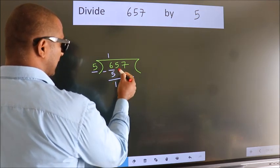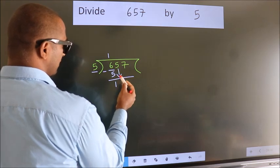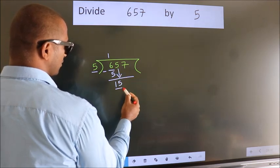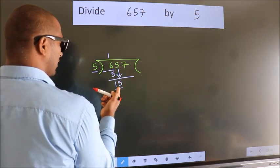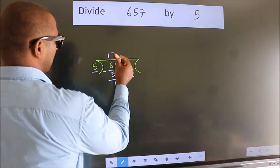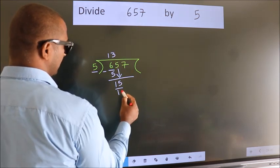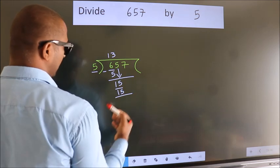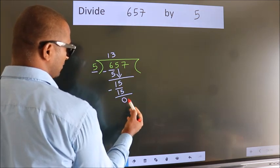After this, bring down the beside number. So, 5 down. So, 15. When do we get 15? In the 5 table, 5 times 3 is 15. Now we subtract. We get 0.